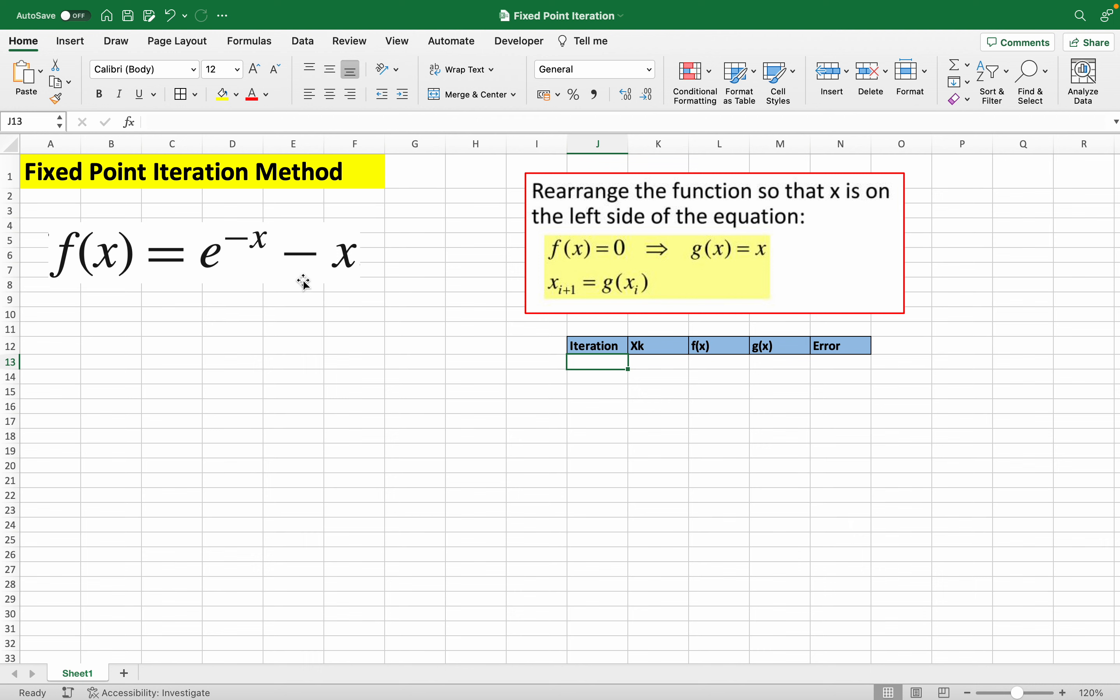I've done this by copying and pasting here. Our g(x) is just this x moved to the other side, where it equals e raised to negative x. That is our g(x), and that is the first step in using the fixed point iteration method.